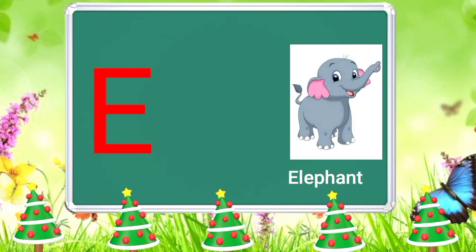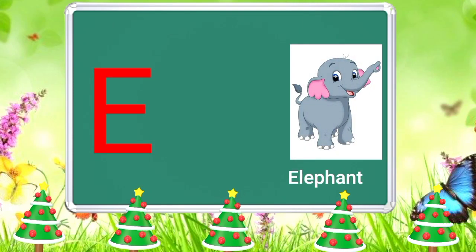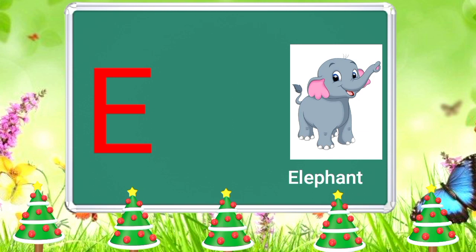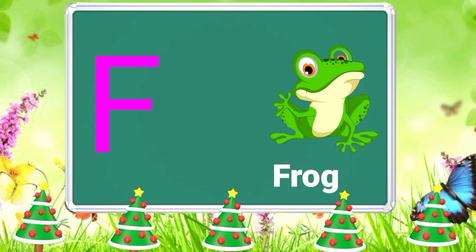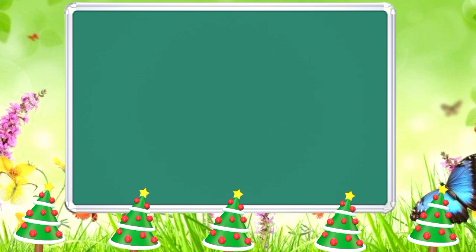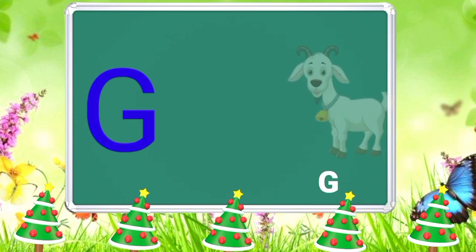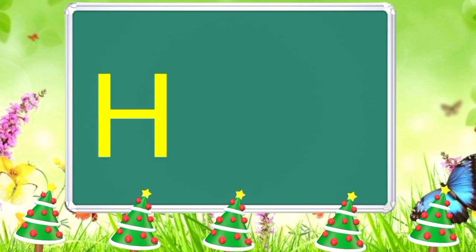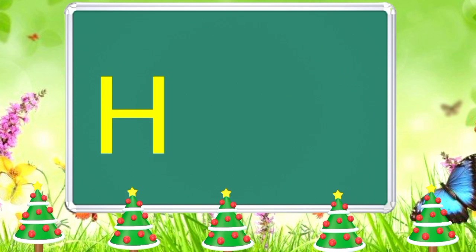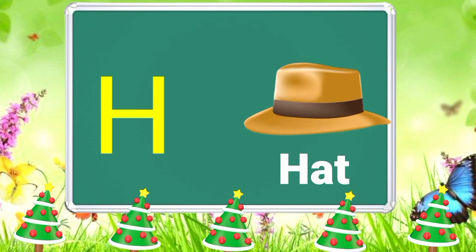E is for Elephant, E-E-Elephant. F is for Frog, F-F-Frog. G is for Goat, G-G-Goat. H is for Hand, H-H-H-Hand.